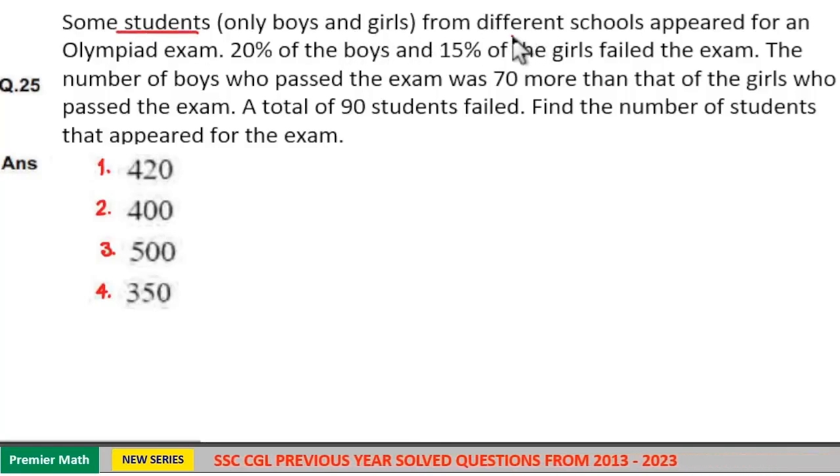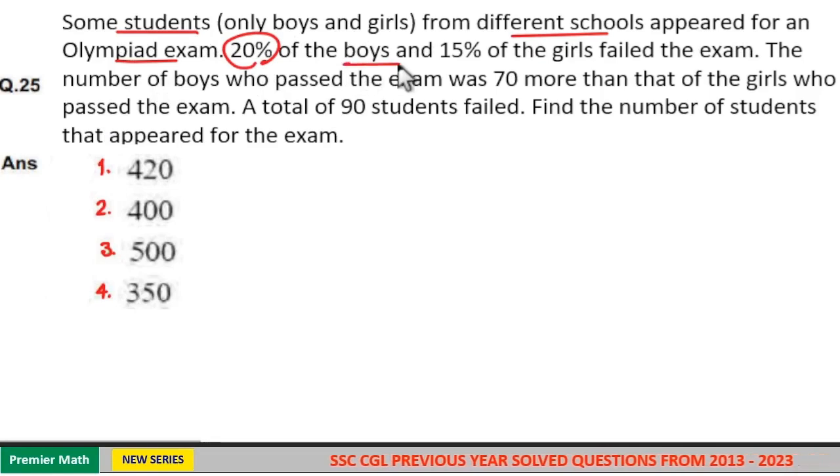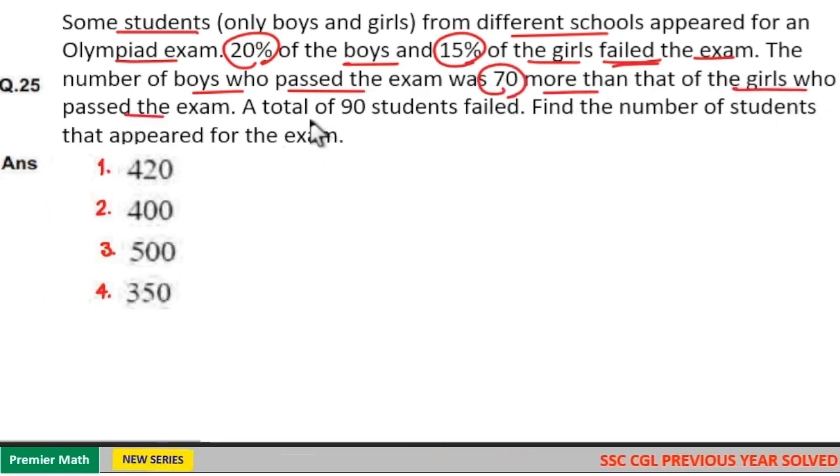Some students, only boys and girls from different schools appeared for an Olympiad exam. 20% of the boys and 15% of the girls failed the exam. The number of boys who passed the exam was 70 more than that of girls who passed the exam. A total of 90 students failed. Find the number of students who appeared for the exam.